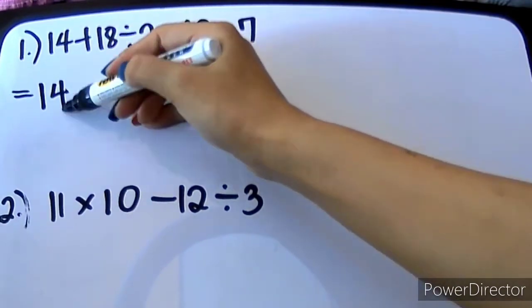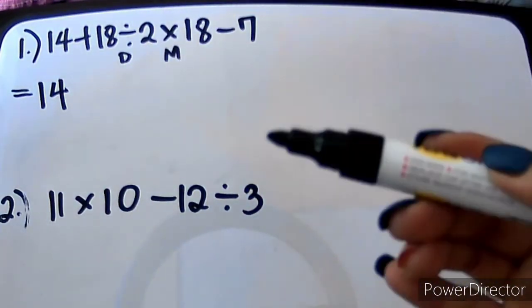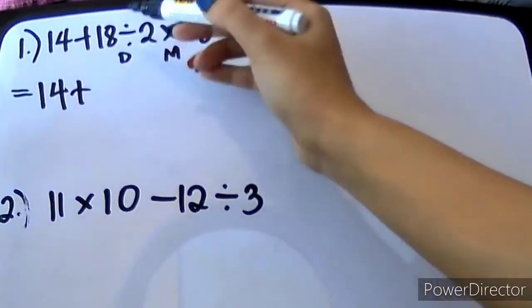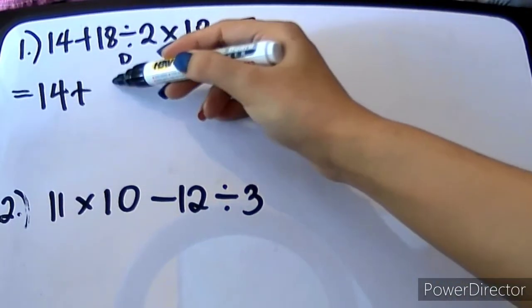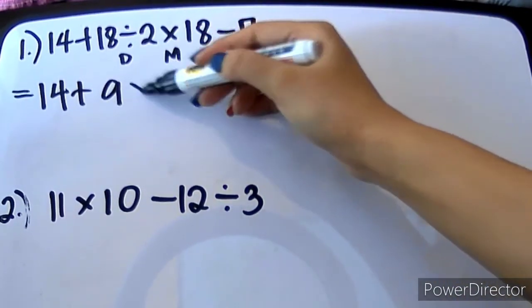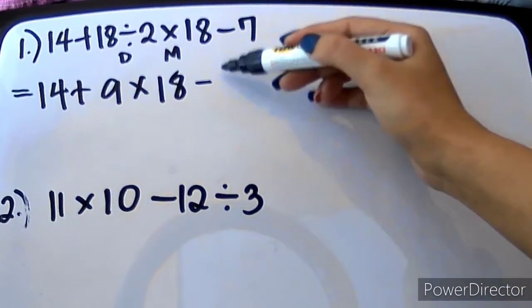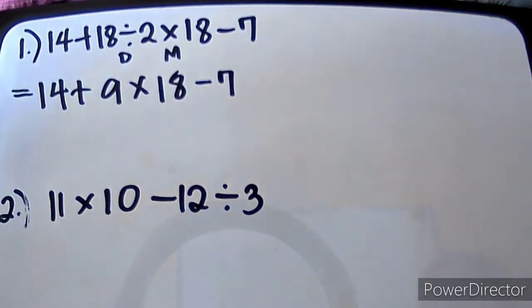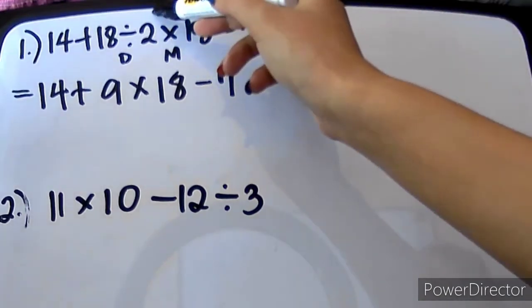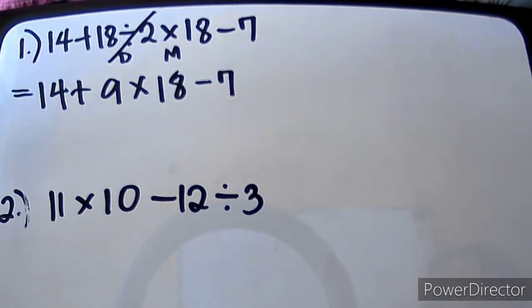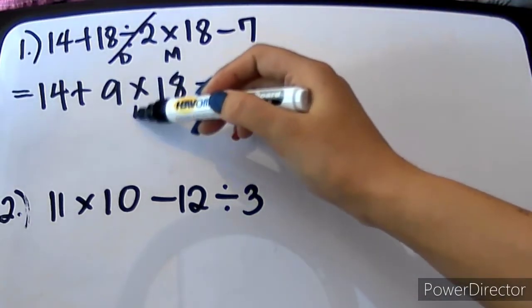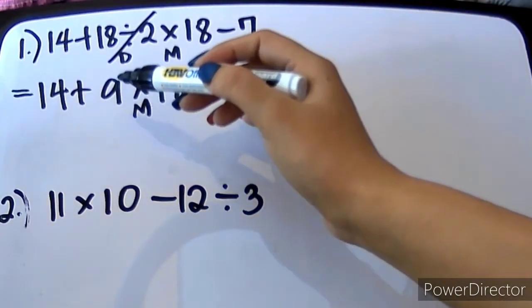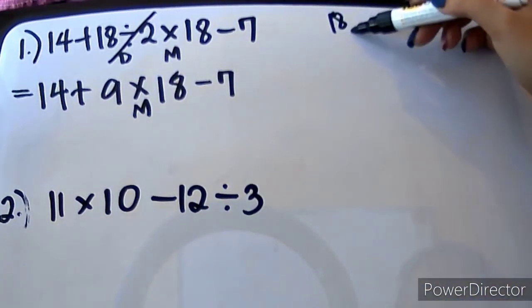So, yung 14, 14 pa din. And then, plus yung 18 divided by 2. 18 divided by 2 is 9. And then let's proceed doing yung times 18, and then minus 7. We already eliminated yung D, which gives us 9. Ngayon, nasa M or D pa rin tayo kasi meron pa rin tayong M. This is our M — kaya gagawin muna natin yung 18 times 9.